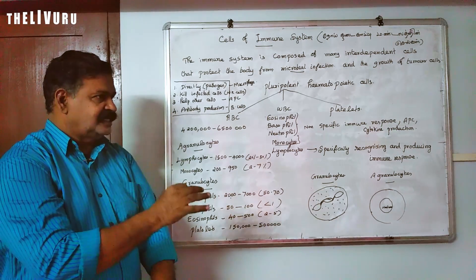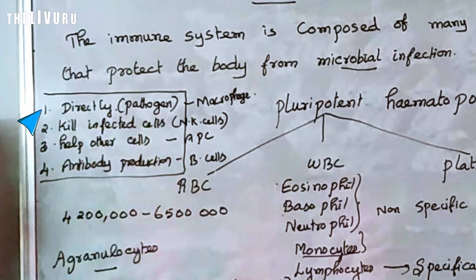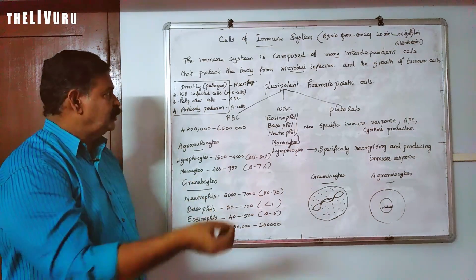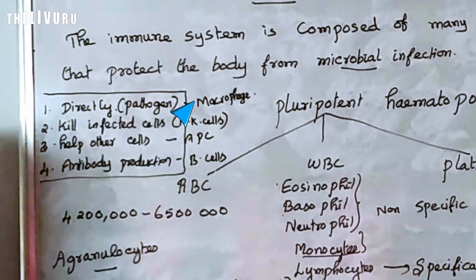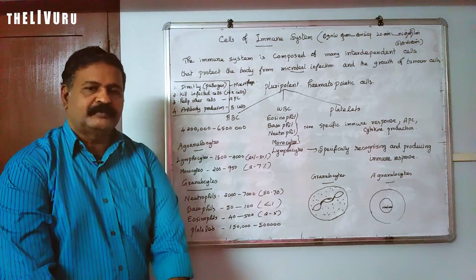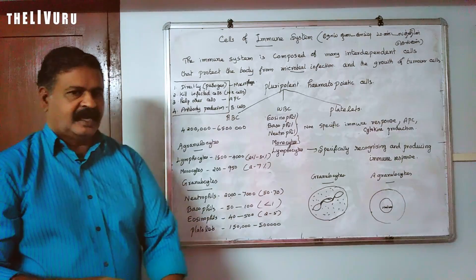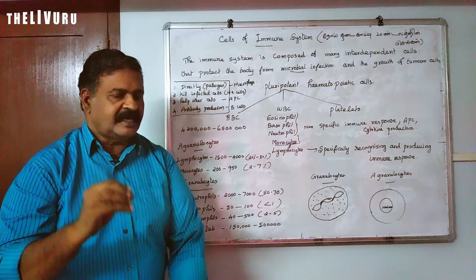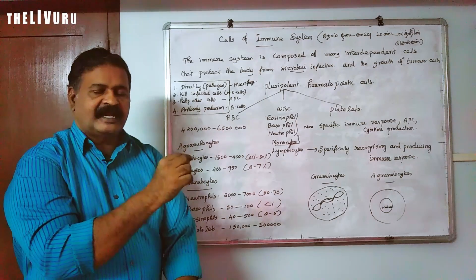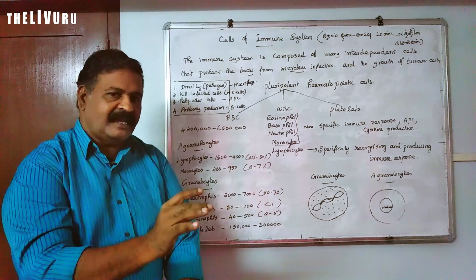The immune system cells directly attack the pathogen and kill them. For example, monocytes — when they enter tissues they are called macrophages. They kill infected cells.